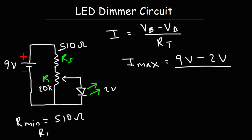The maximum resistance is going to be the maximum resistance of the potentiometer, which is 20k plus 510. So that's 20,000 plus 510, so that's 20,510 or 20.51k.